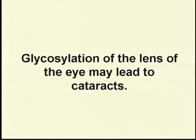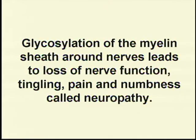Glycosylation in the lens of the eye leads to cataracts. Glycosylation of the myelin sheath around the nerves — the myelin sheath is a fat tissue that assists in the conduction of the nerve impulse. With enough glucose on that myelin sheath and nerve protein, we start to lose nerve function. Diabetics begin having tingling in their feet, pain, or numbness — we give that the fancy name neuropathy.